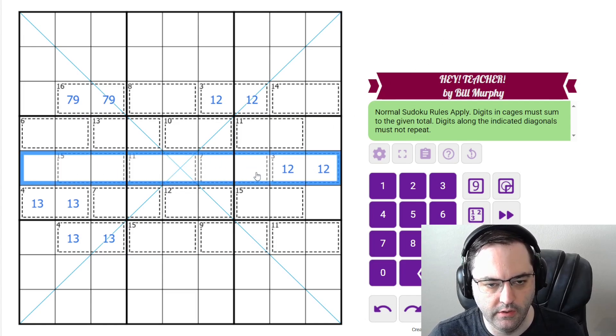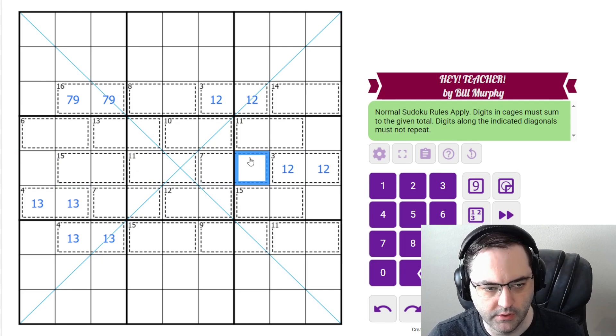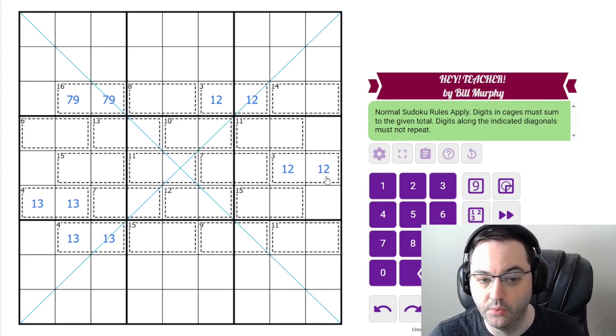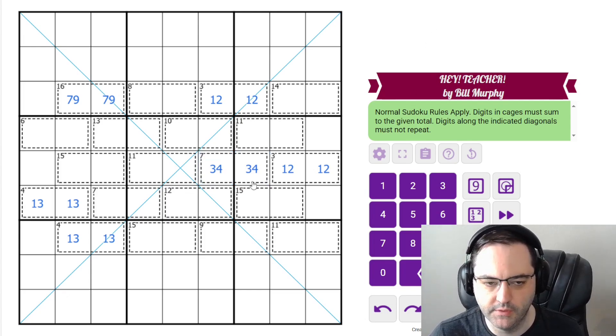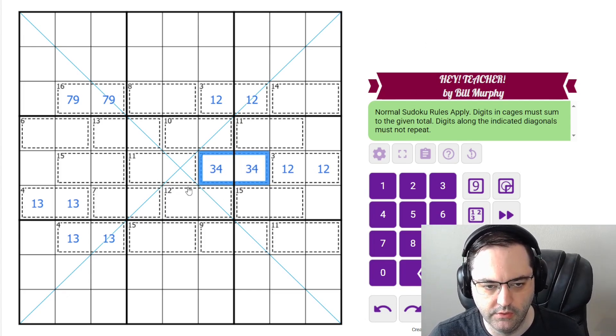And I'm going to start here. This is kind of a classic pattern in killer. If you have 3, which must be 1, 2, you can't use 1 or 2 in the 7. So the lowest this cage could contain is 3, 4, which is 7. So it must be 3, 4. That's the only way to do it.